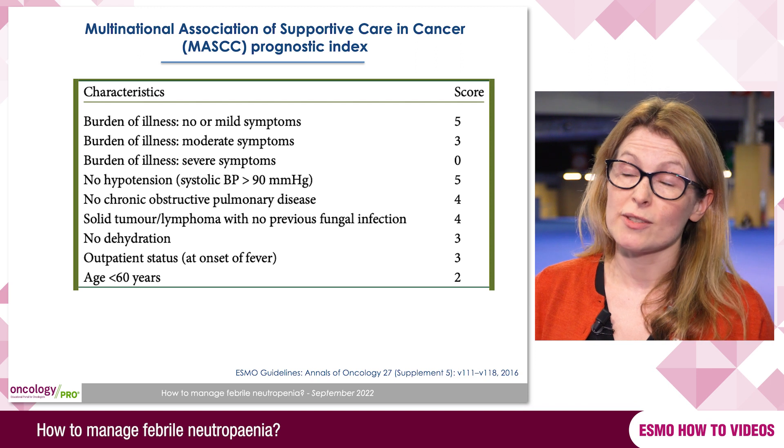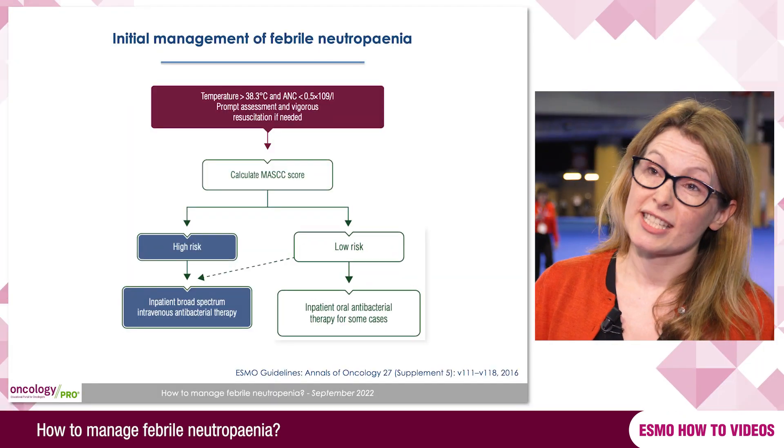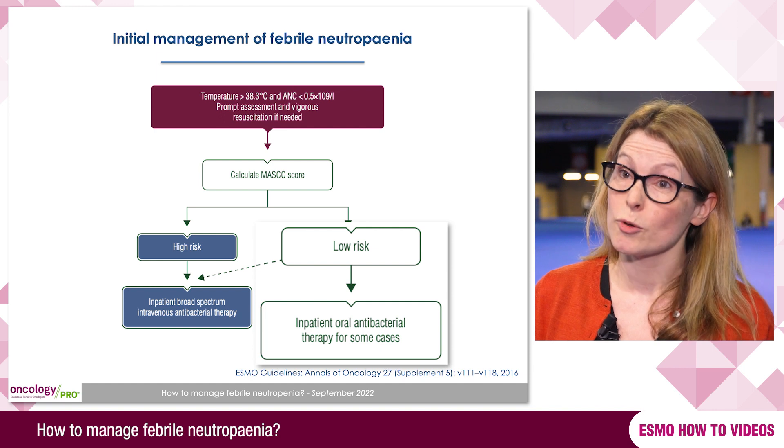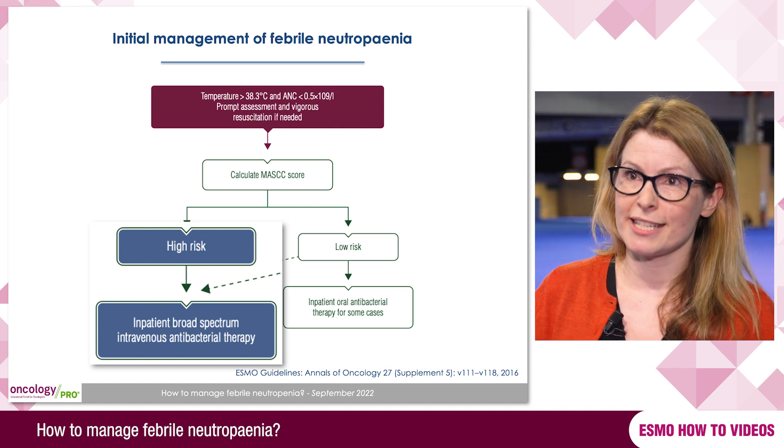Various algorithms help stratify patients with febrile neutropenia regarding the chance of complications. One of the most commonly used is the MASCC score, which includes factors such as patient age, comorbidities, and cancer type. A score above 21 indicates lower risk — serious complications in only about 6% and mortality of only 1%. This group may be switched early to oral antibiotics and even managed at home in an ambulatory setting with adequate surveillance. Patients with a score below 21, or where the attending physician is concerned, must be admitted and kept under close surveillance.